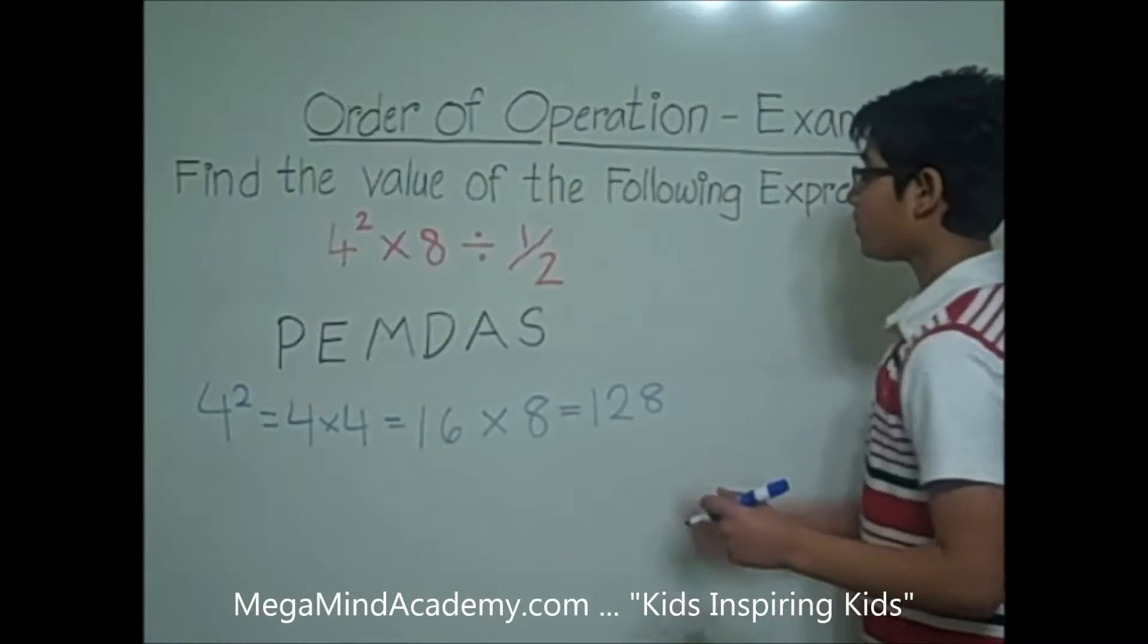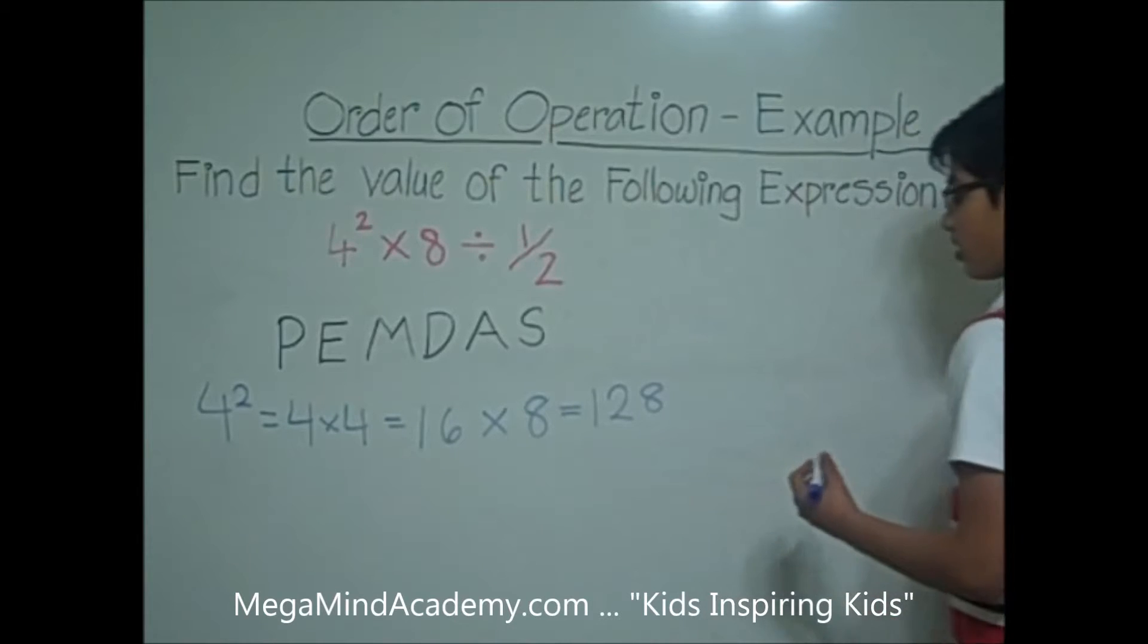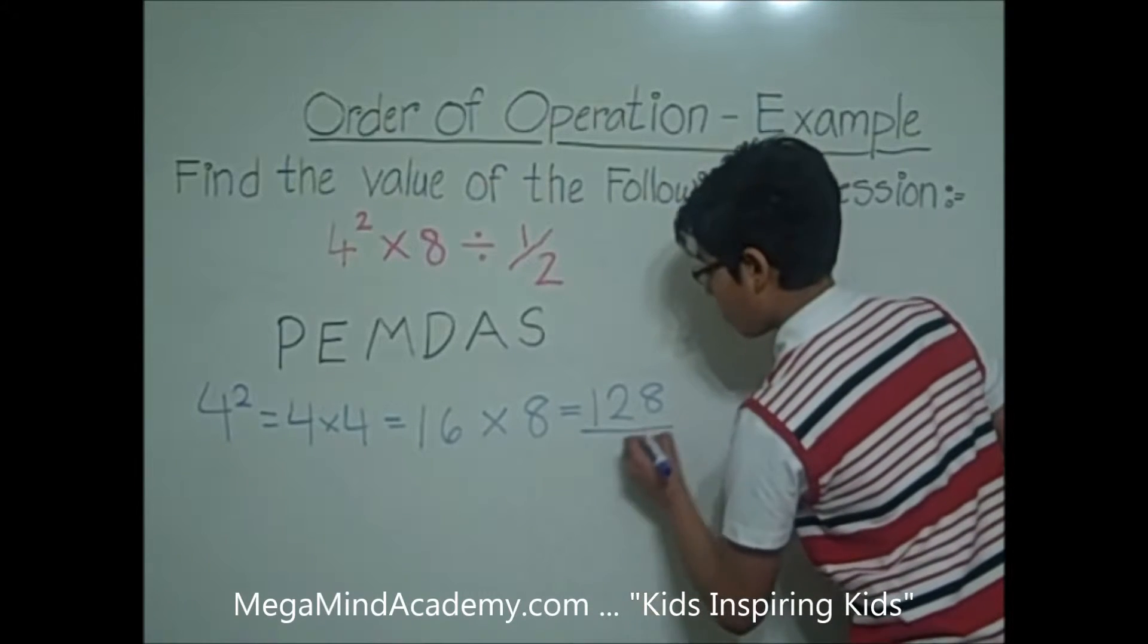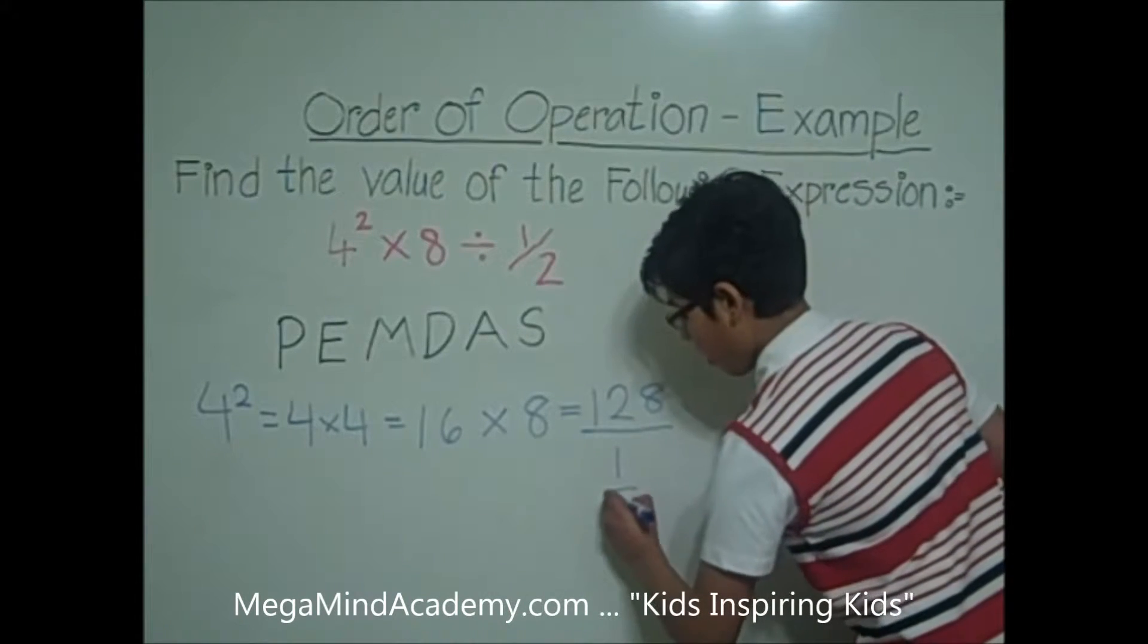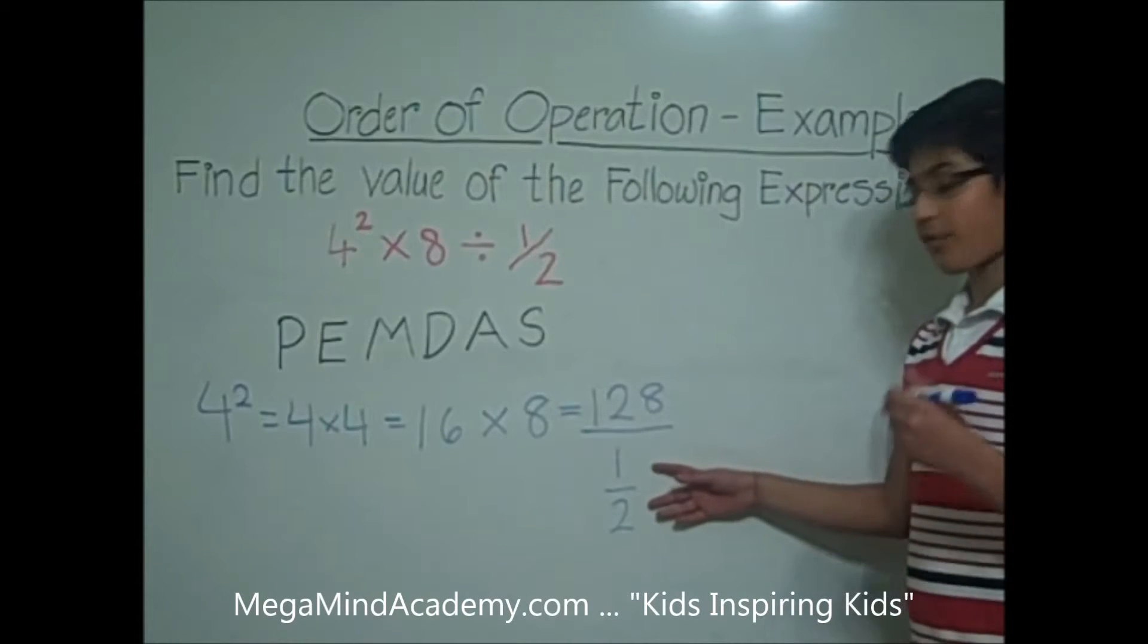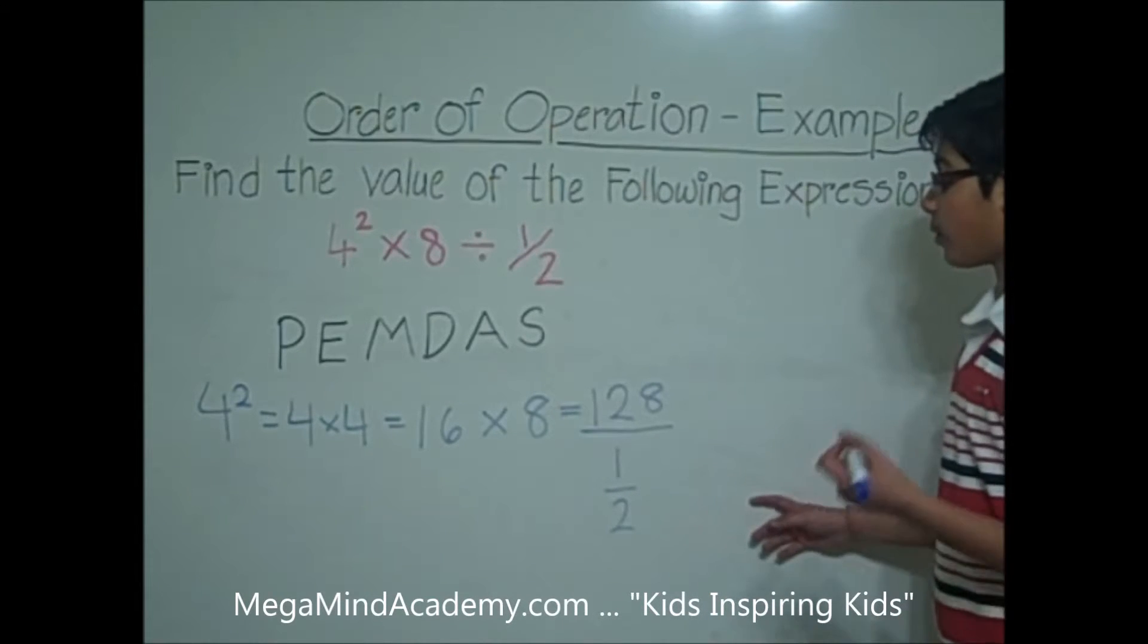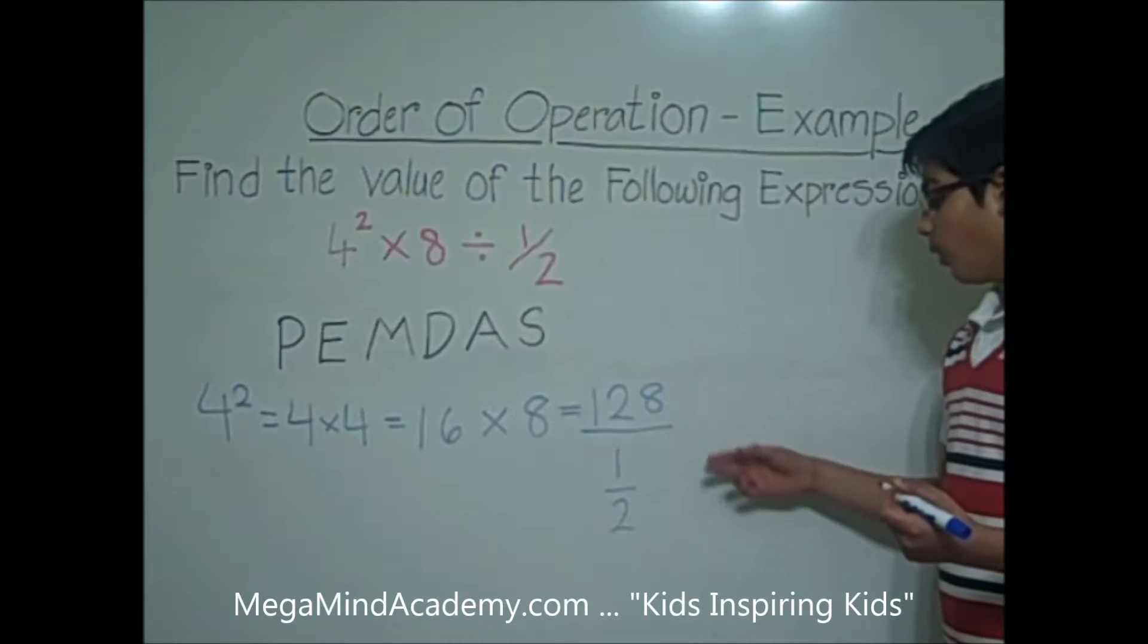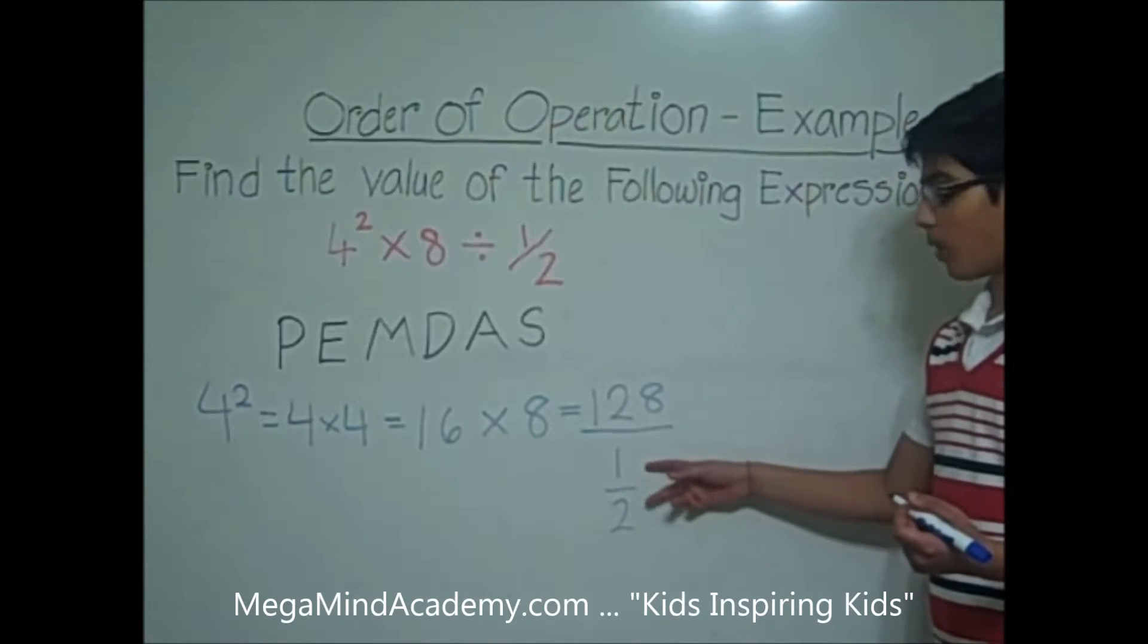Now, we have to divide by 1 half. So, divided by 1 half. But the denominator is a fraction. So, that means that we have to multiply 128 with the reciprocal of 1 half.